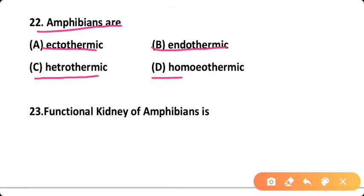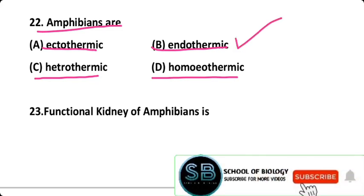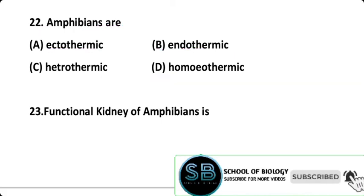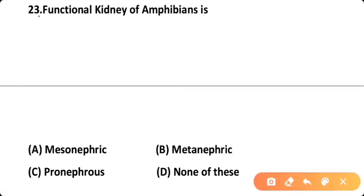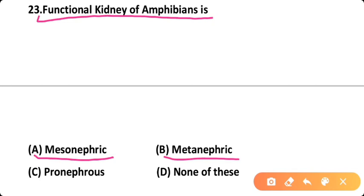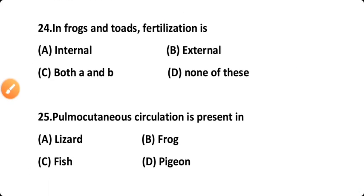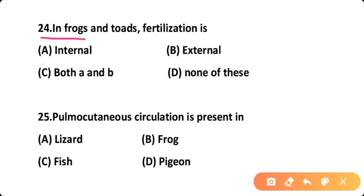Question twenty-two: Amphibians are — Option A: ectothermic, Option B: endothermic, Option C: heterothermic, Option D: homeothermic. The correct answer given is Option B — amphibians are described as endothermic in developmental mode. Question twenty-three: The functional kidney of amphibians is — Option A: mesonephric, Option B: metanephric, Option C: pronephric, Option D: none of these. Correct answer is Option A — the kidney of adult amphibians is mesonephric, while the larval kidney is pronephric.